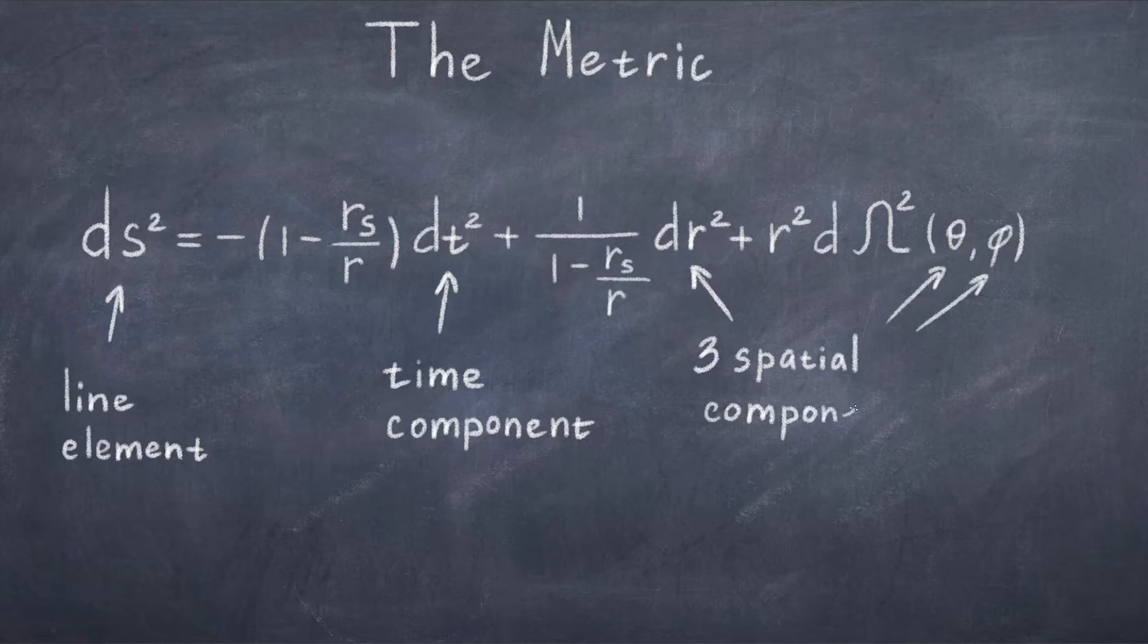What we should focus on in this equation is the first two terms, with the term 1 minus rs divided by r. r is the radial coordinate, thus how far from the origin we are. Usually the origin is at the center of a black hole if you are applying this solution to a black hole.